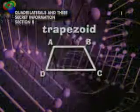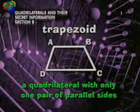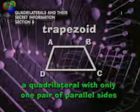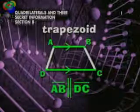There's one more shape. A trapezoid is a quadrilateral with only one pair of parallel sides. In this trapezoid, segments AB and DC are parallel.